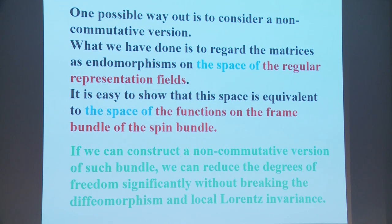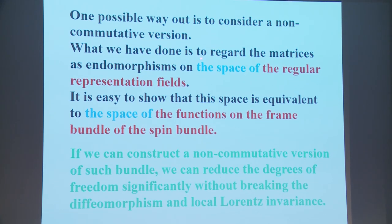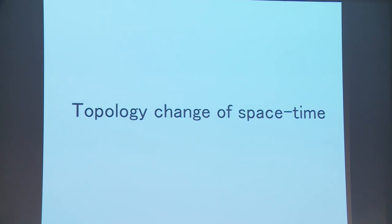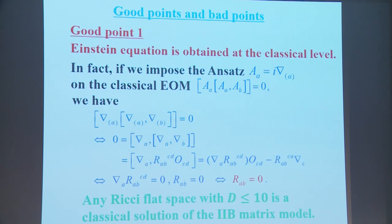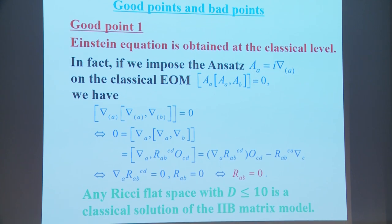One possible way out is to consider a non-commutative version. We have regarded the matrices as endomorphisms on the space of the regular representation field, and it is easy to show that this space is equivalent to the space of functions on the frame bundle of the spin bundle. If we can construct a non-commutative version of such a bundle, we can reduce the degrees of freedom sufficiently without breaking diffeomorphism and local Lorentz invariance. This is an open question, but I think this direction is promising.